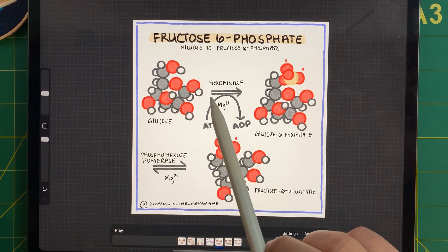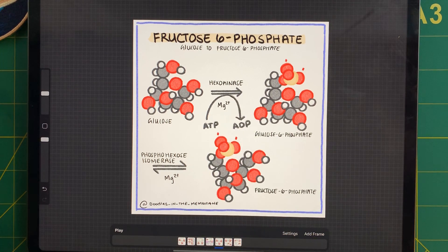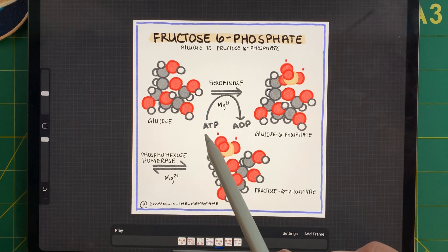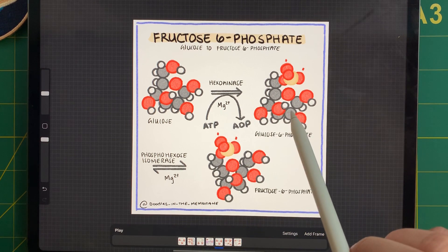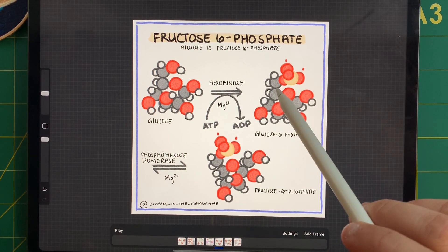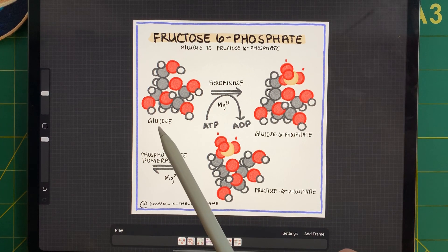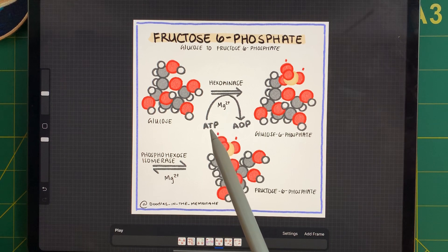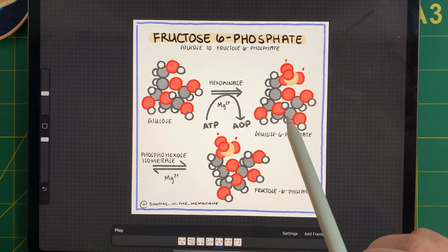So in this case, we're working with hexokinase. Anytime we work with a kinase, we're going to be moving a phosphoro group. In this case, we're moving a phosphoro group from ATP to glucose. Especially, we're going to be moving the phosphoro group to the sixth carbon. So glucose reacts with hexokinase to move a phosphoro group from ATP onto the sixth carbon.